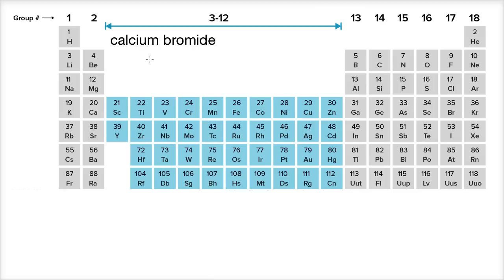Alright, so the convention is that we write the positive ion first. And so that's a pretty good clue that calcium is going to be the positive ion. Now let's look at the periodic table to confirm that it's likely that calcium would ionize as a cation.